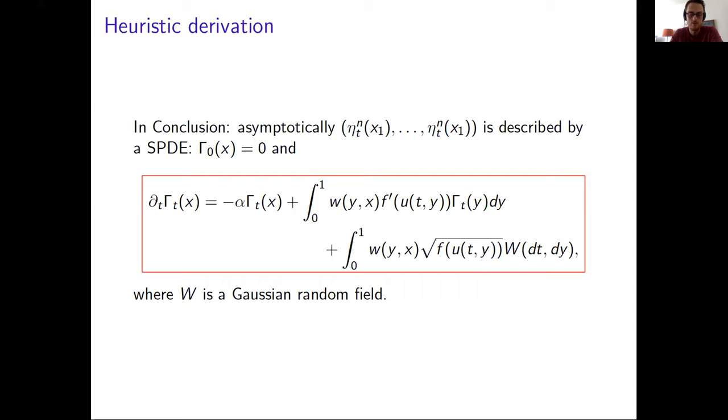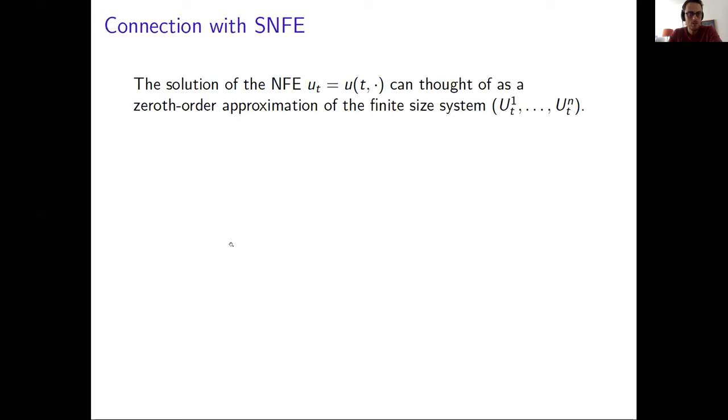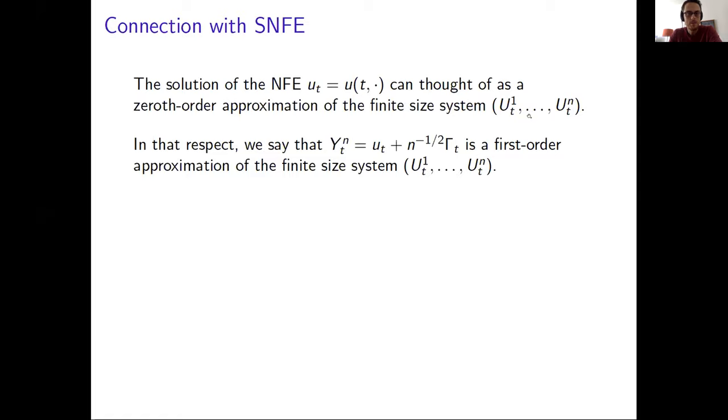I won't have time to discuss the details, but we can do it later if you want. So in conclusion from the heuristics, I hope it's clear that in fact the vector of these etas, the vector of my fluctuations, can be described as a solution of an SPDE of the following form. So I'm writing not in the integral form, but in the differential form, and you would get this equation.